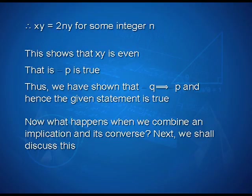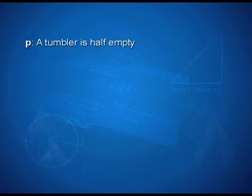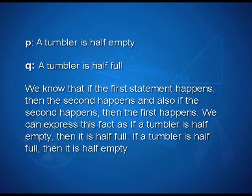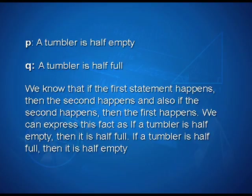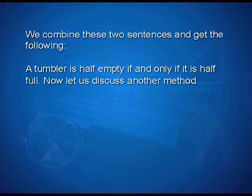Now, what happens when we combine an implication and its converse? Let us consider the statements: p — a tumbler is half empty; q — a tumbler is half full. We know that if the first statement happens then the second happens, and also if the second happens then the first happens. We can express this as: if a tumbler is half empty then it is half full, and if a tumbler is half full then it is half empty. We combine these two sentences and get: a tumbler is half empty if and only if it is half full.